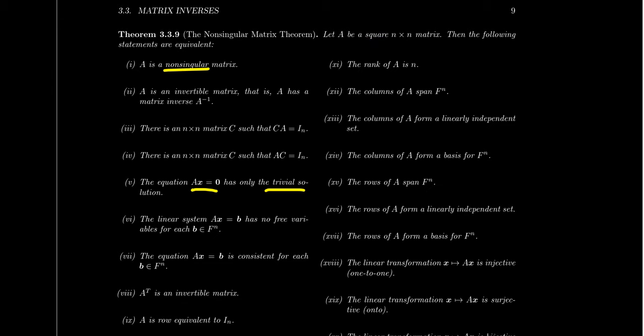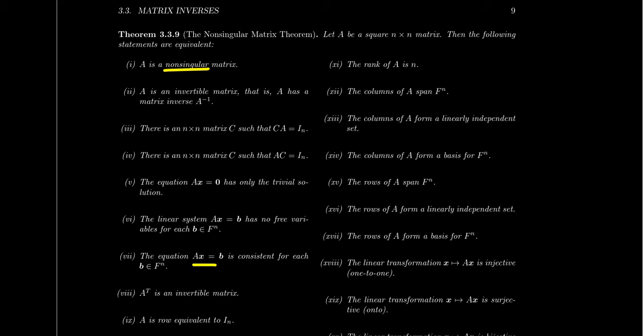This connects to a lot of things, because if Ax equals 0 has only the trivial solution, that means the equation has no free variables. And the existence of free variables has nothing to do with the vector on the right-hand side. So Ax equals b would also have no free variables — that's exactly condition 6. If Ax equals b has no free variables, that means the matrix won't have any rows of zeros when you row reduce A, which means it will necessarily be consistent. So Ax equals b is going to be consistent for all vectors b.